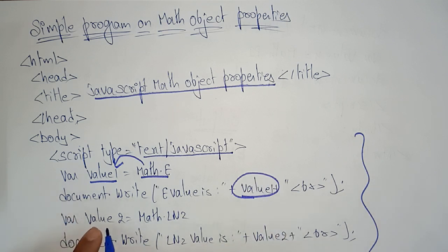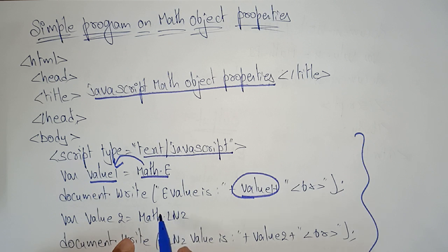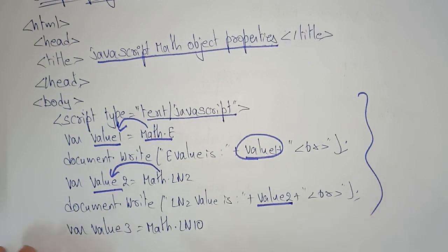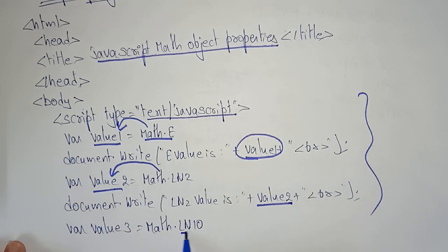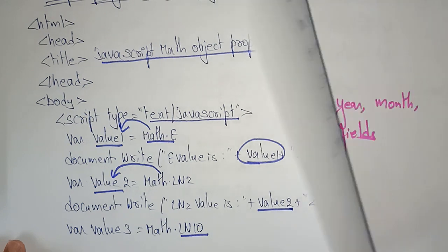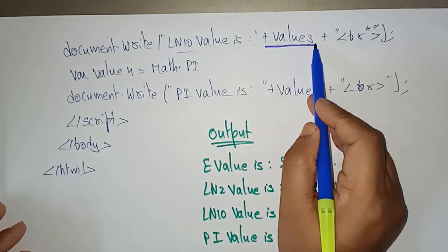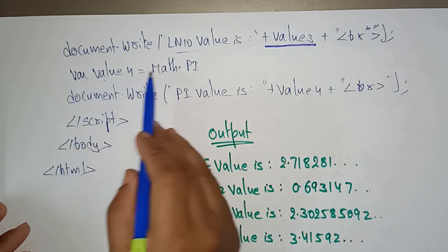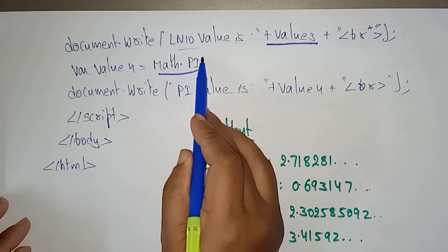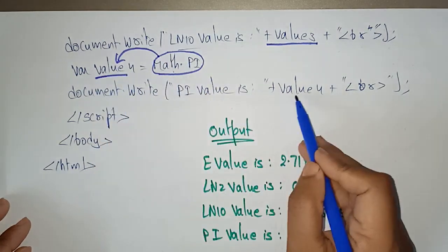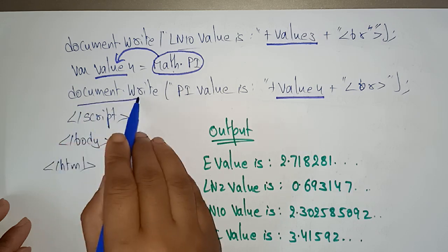Next, I'm declaring variable value2 as Math.LN2 — the natural logarithm of 2. That static value is stored in value2 and printed using document.write. Then variable value3 is assigned Math.LN10 — the natural logarithm of 10 — and printed with document.write. Finally, I'm declaring value4 as Math.PI — the pi value, approximately 3.14 — and printing it using document.write.